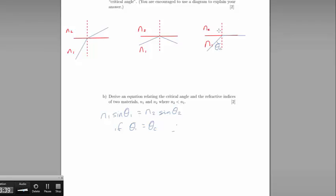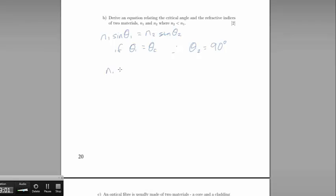If theta 1 is the critical angle, that must mean that theta 2 — the angle between the normal — is a right angle, so 90 degrees. Therefore, N1 sine theta c is equal to N2 multiplied by sine 90. Since sine 90 is 1, this gives us N1 sine theta c equals N2, and we can write: sine theta c equals N2 divided by N1.